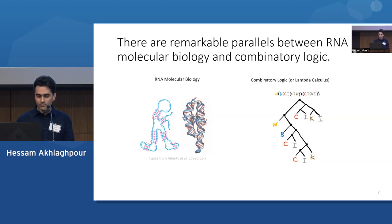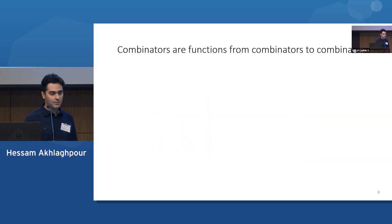So first, what is combinatory logic? Combinatory logic has these entities called combinators, which are essentially just functions. And their inputs and outputs are other combinators, other functions. So for example, the I combinator, the identity combinator, is a function that returns whatever it receives. So it gets X and it returns X. Or the K combinator takes two inputs and returns the first one, deletes the second one. Or the C combinator takes three inputs and swaps the second and third inputs. So these are very simple operations.